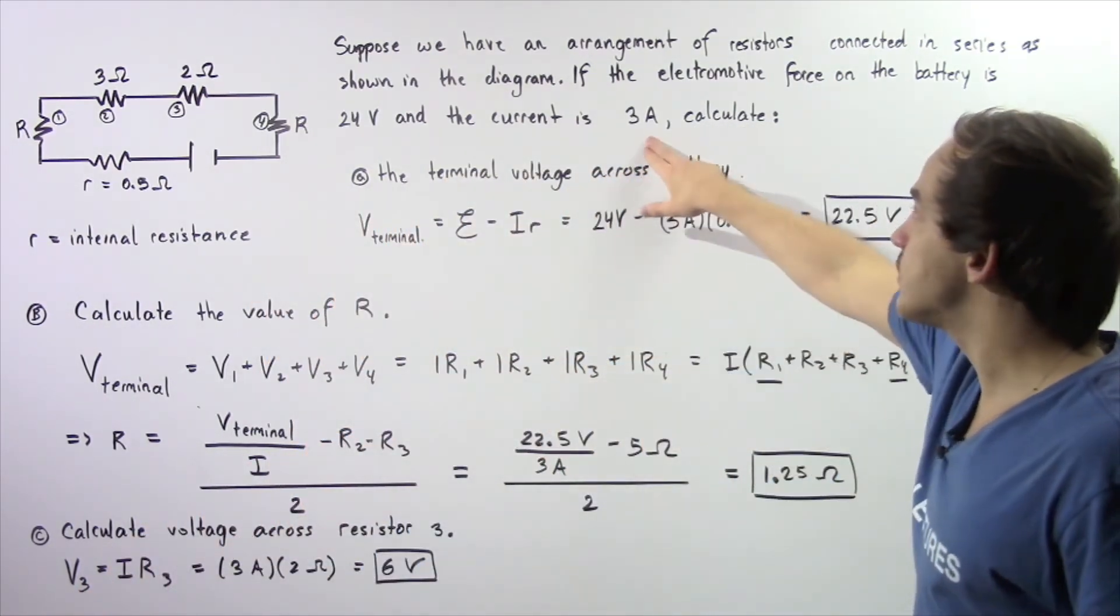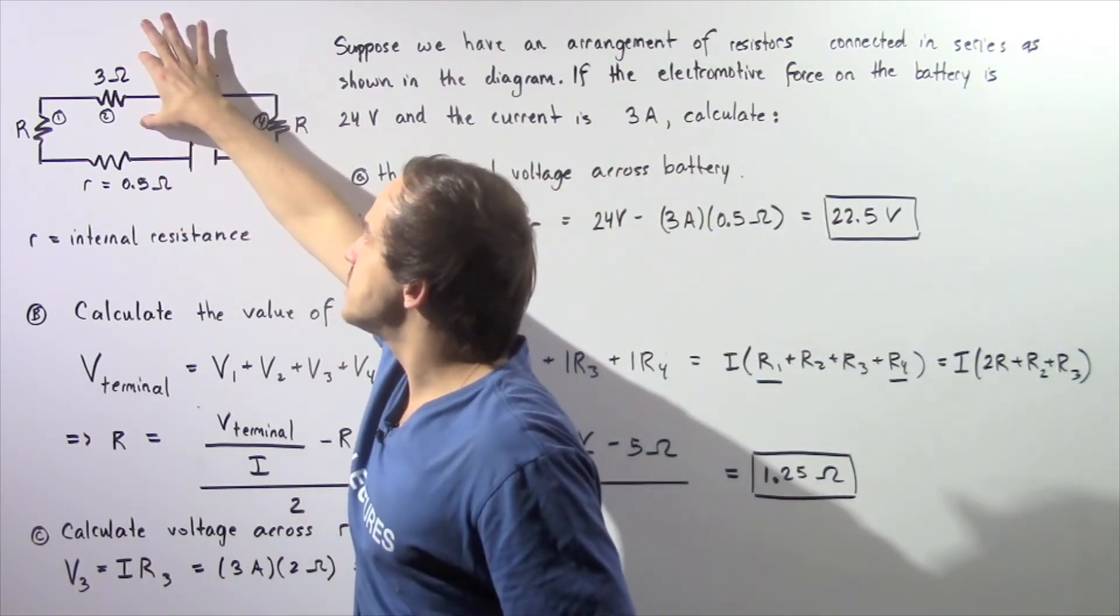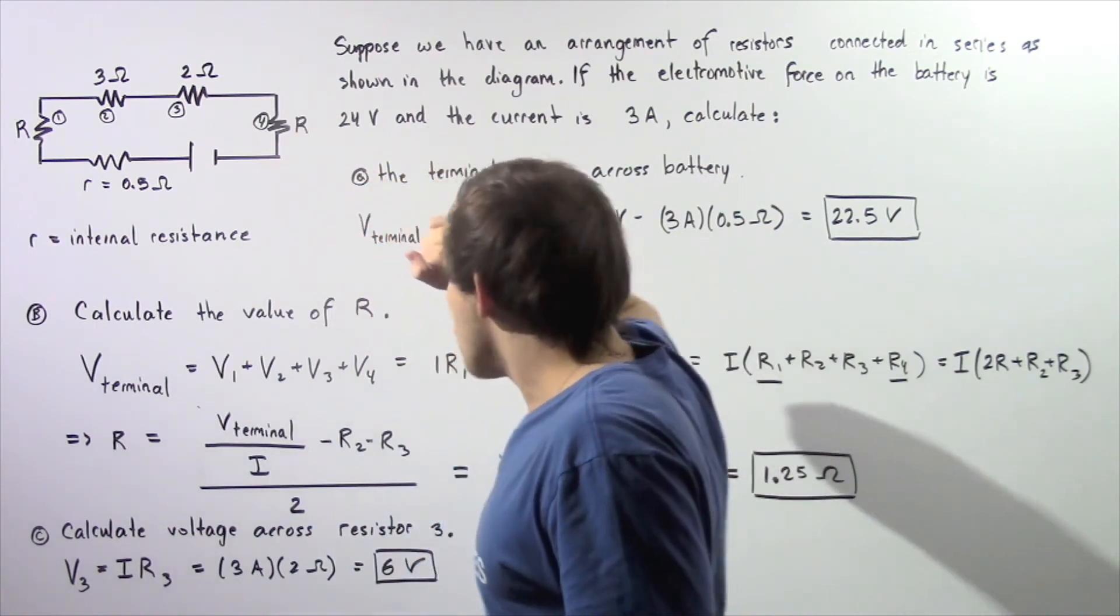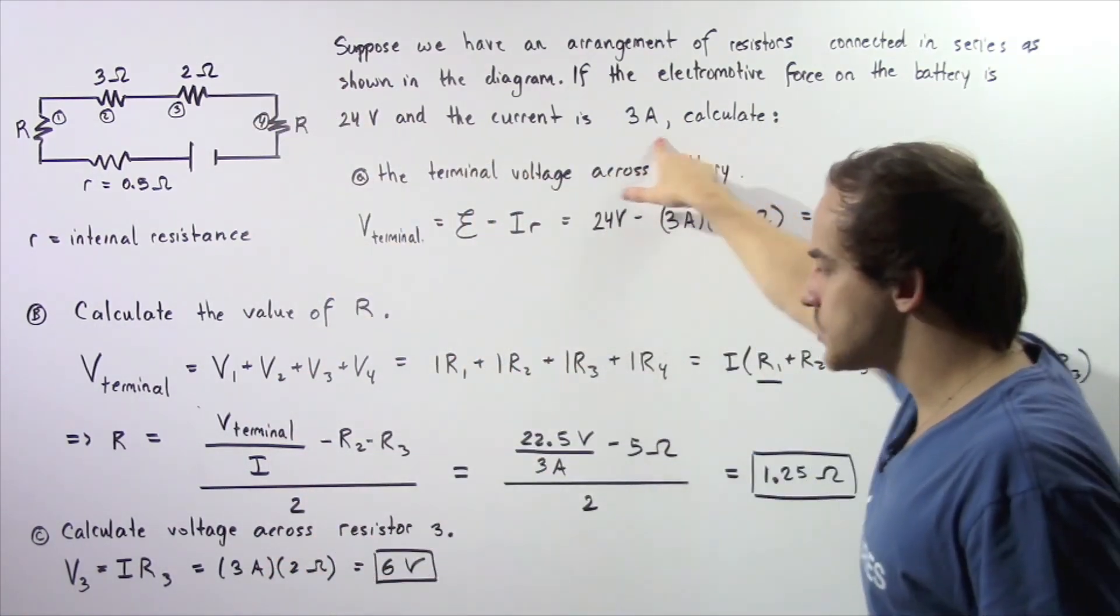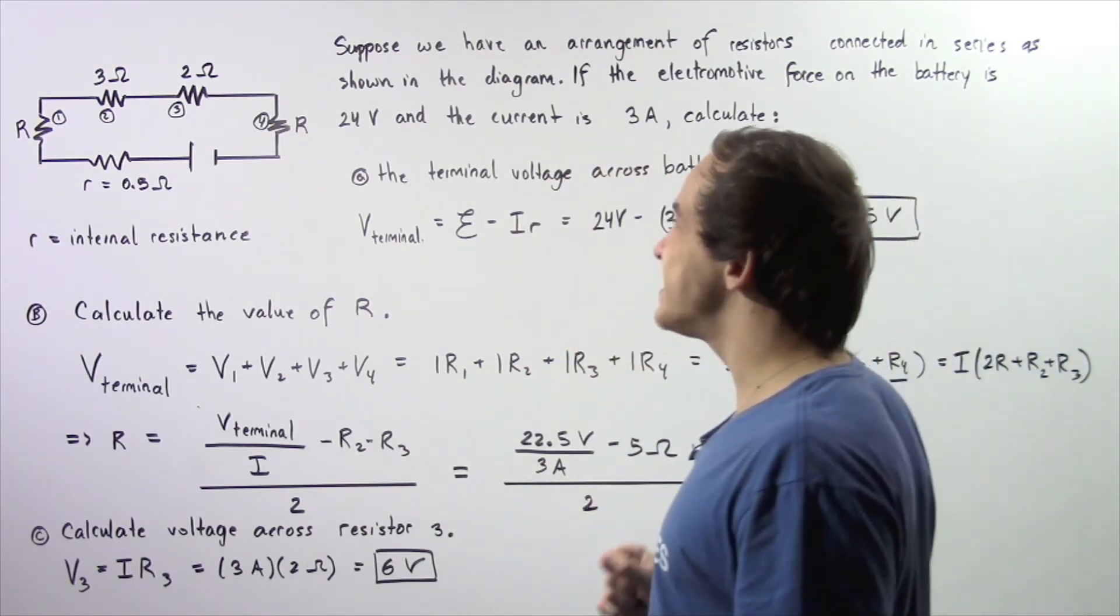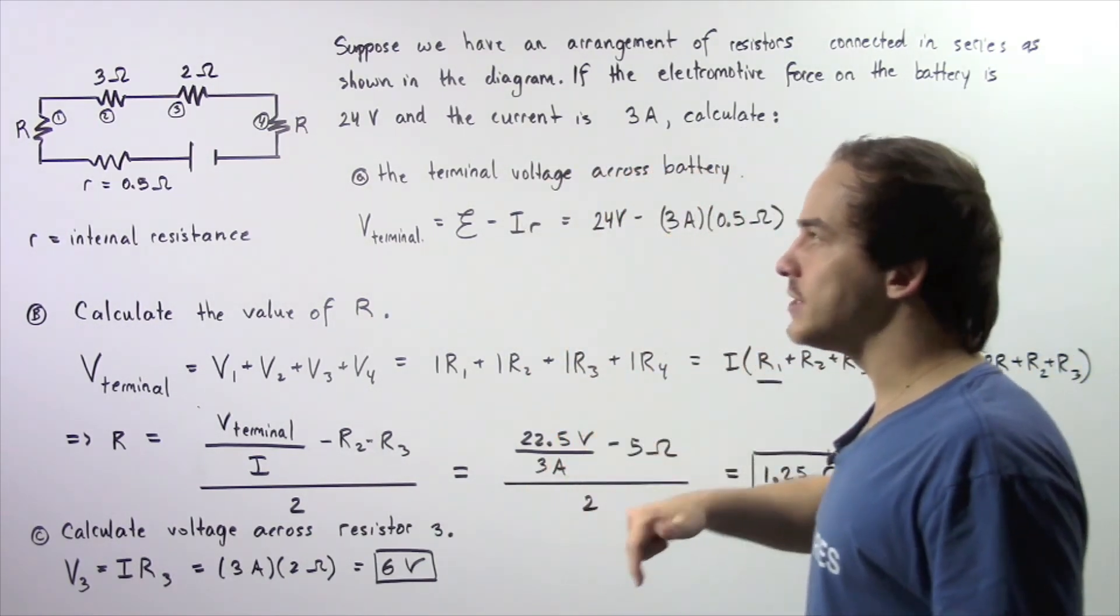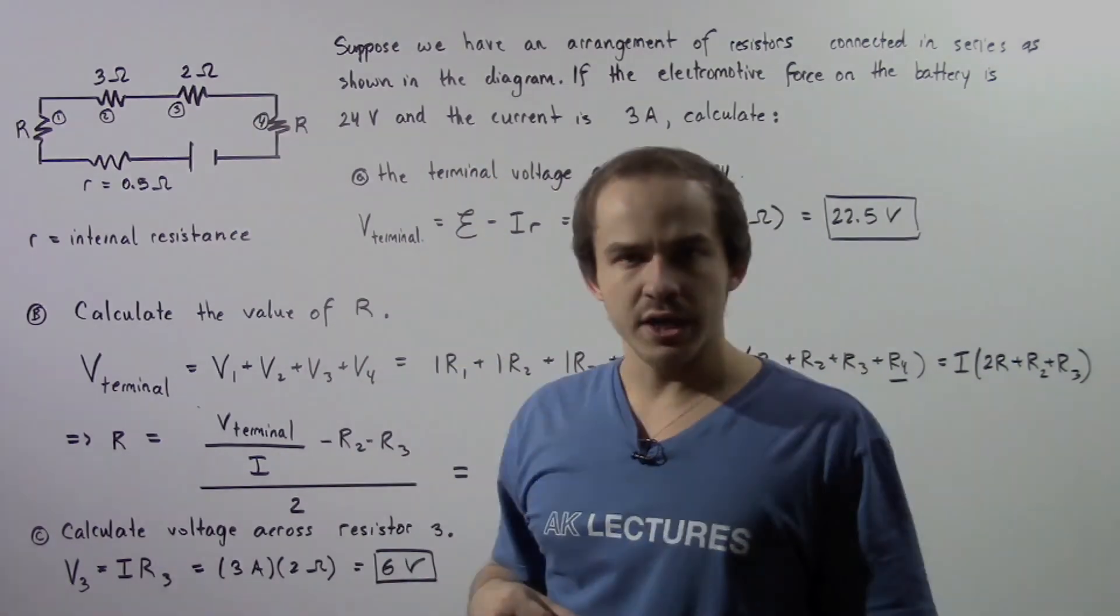So the resistance is 2 ohms. The current is 3 amps. 3 multiplied by 2 gives us a voltage of 6. So a voltage difference of 6 volts exists across resistor number 3.